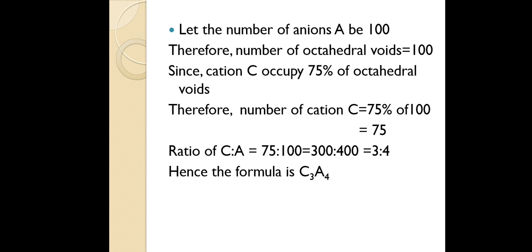Not all 100 voids are occupied — only 75% are, giving 75 cations. So the number of cations is 75 and the number of anions is 100. The ratio of cations to anions is 75:100. Simplifying by dividing by 25 gives 3:4. Therefore the formula of the solid is C₃A₄, which matches the correct option.